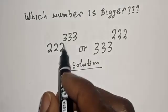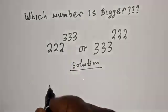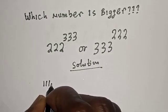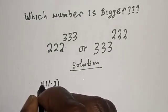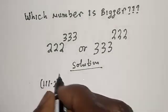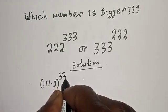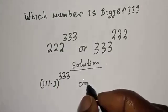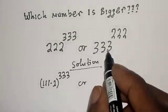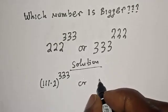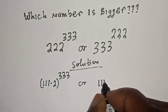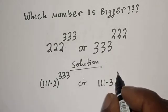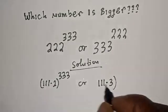222 raised to the power of 333 can be written as (111 × 2) raised to the power of 333. And 333 raised to the power of 222 can be written as (111 × 3) raised to the power of 222.